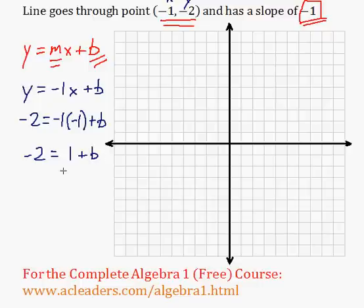Now I want to isolate b, so I will subtract 1 from both sides of the equation. -2 minus 1, -3 = b.